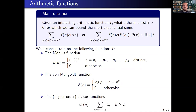Second, we consider the primes via the von Mangoldt function, a weighted indicator of the primes giving weight log p when n is a power of p and zero otherwise. For exponential sums of the von Mangoldt function you expect cancellation on minor arcs and a main term when your polynomial has rational coefficients with small denominator. Third, the higher-order divisor functions d_k(n), the number of ways to write n as a product of k natural numbers.